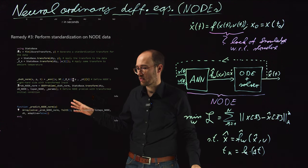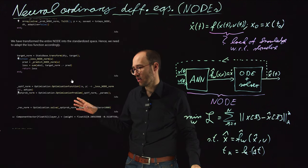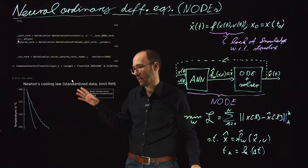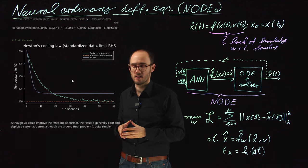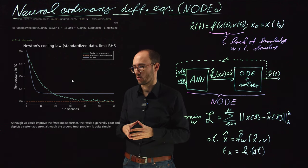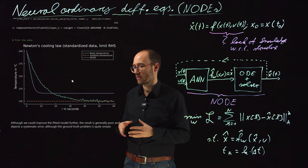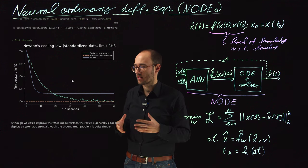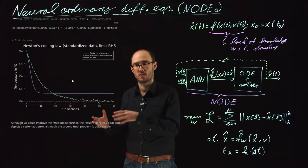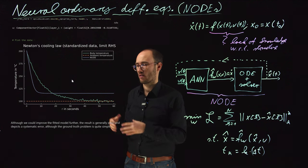With the standardized data, we go through the prediction, the loss node, and the optimization loop, then re-transform the standardized output back into the normal temperature and time space to plot the result. The blue NODE response already improved — it goes in the right direction, representing Newton's cooling dynamics, though it is still not ideal.